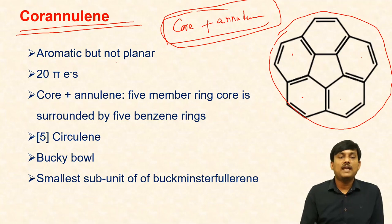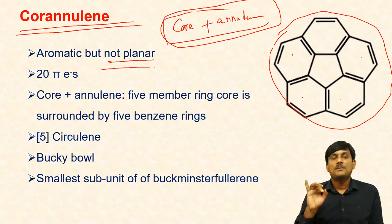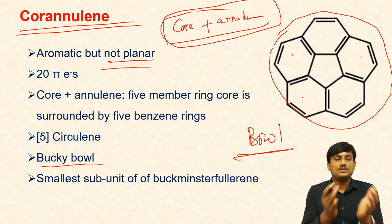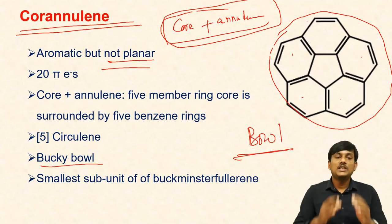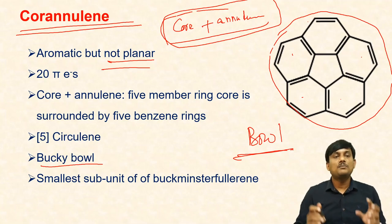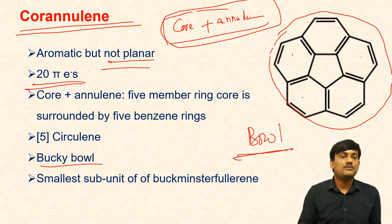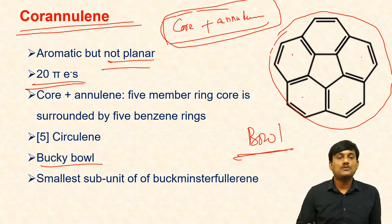It is aromatic, but it is not planar. Generally, planar compounds are aromatic. This one is not planar — it has a bowl shape. Even though it is not planar, the molecule is aromatic. In this case there is a delocalization of 20 pi electrons. Since it has the benzene rings, it is aromatic irrespective of the number of pi electrons. Corannulene is surrounded by five benzene rings. That's why it is called as corannulene, or also called five-circulene.